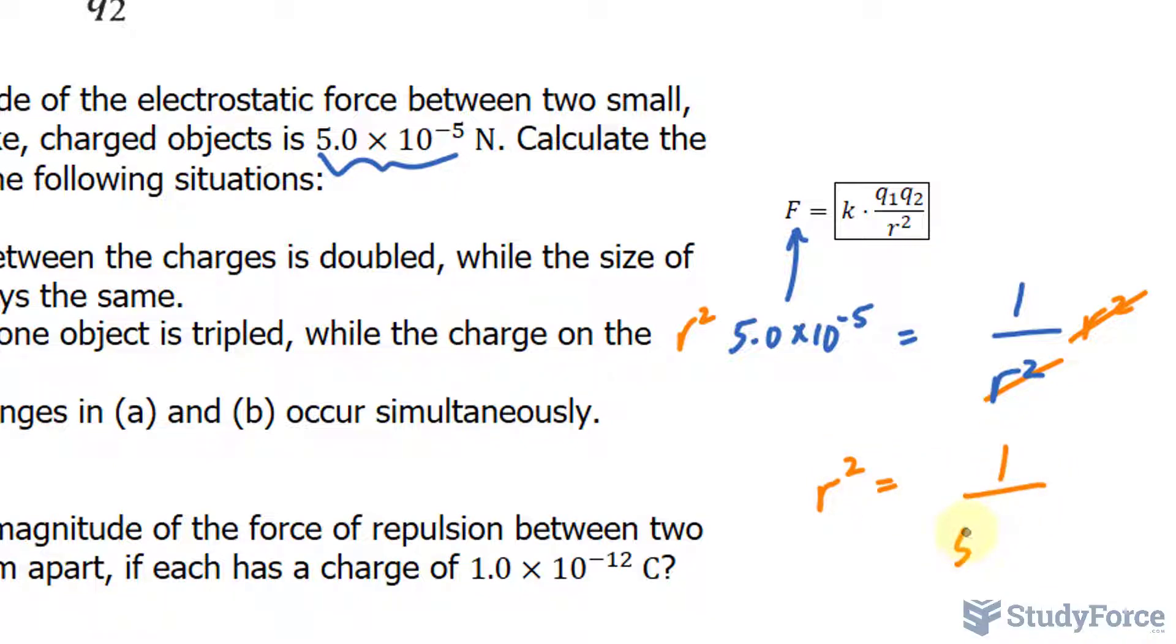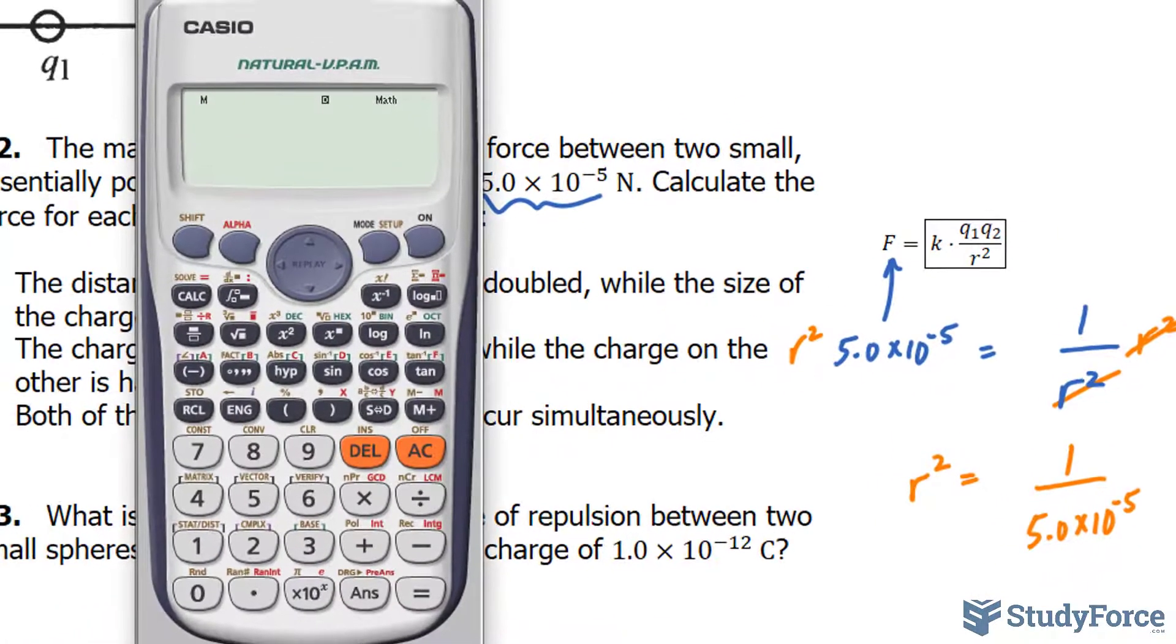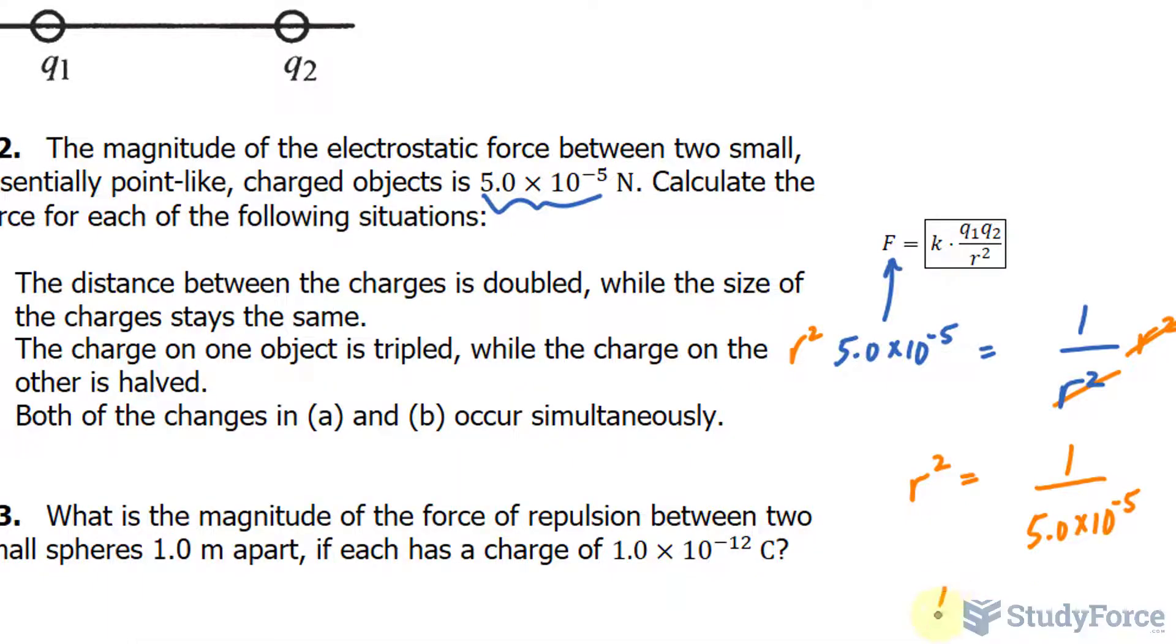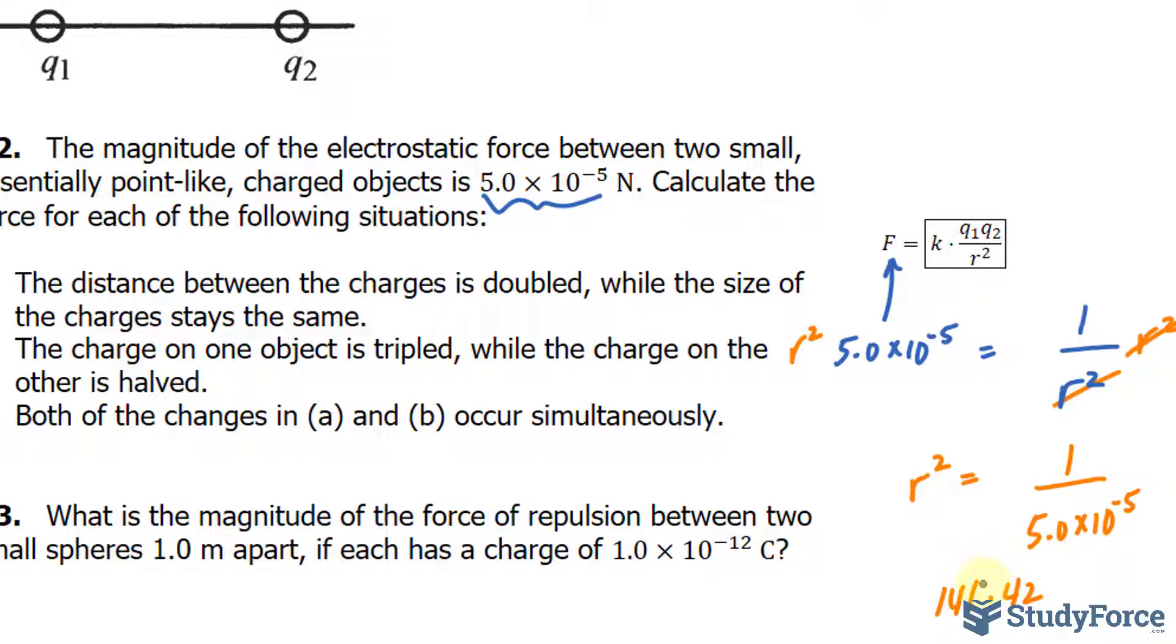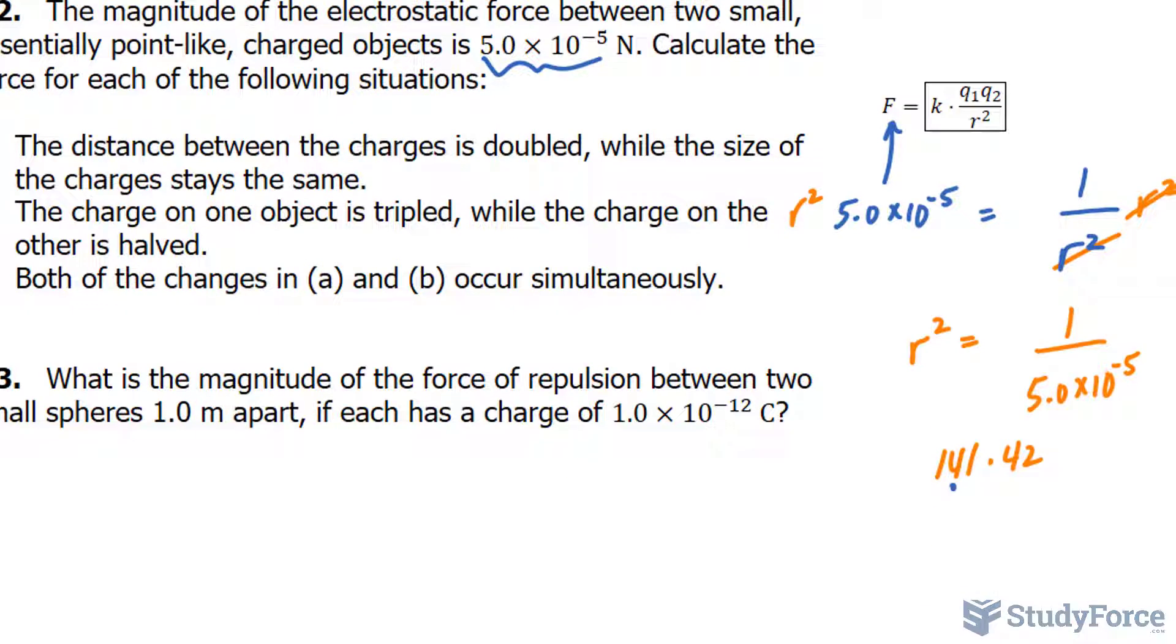So I have 1 over 5.0 times 10 to the power of negative 5 and square root after that. 1 divided by 5.0 times 10 to the power of negative 5 and we square root that to get 141.42. This needs to be two significant figures, but I'll carry a few numbers in the calculation. I'll just put a dot there so I don't forget that it's two significant figures. So we found the distance between the two charges originally.